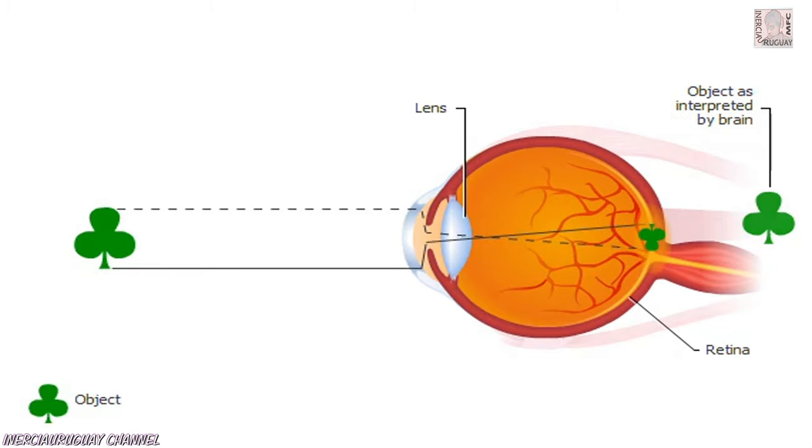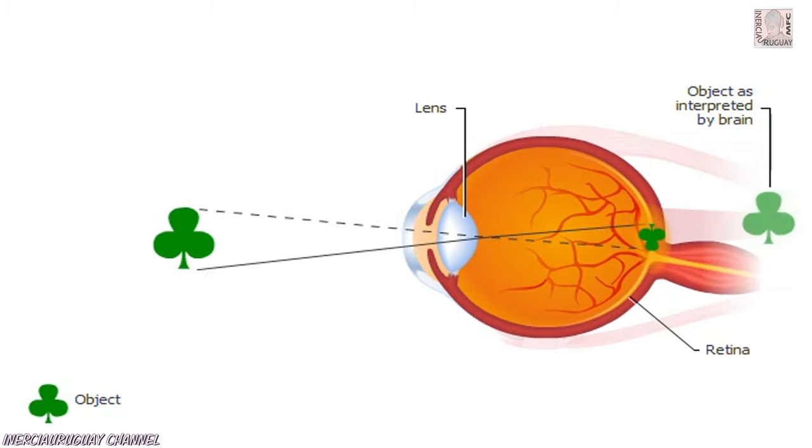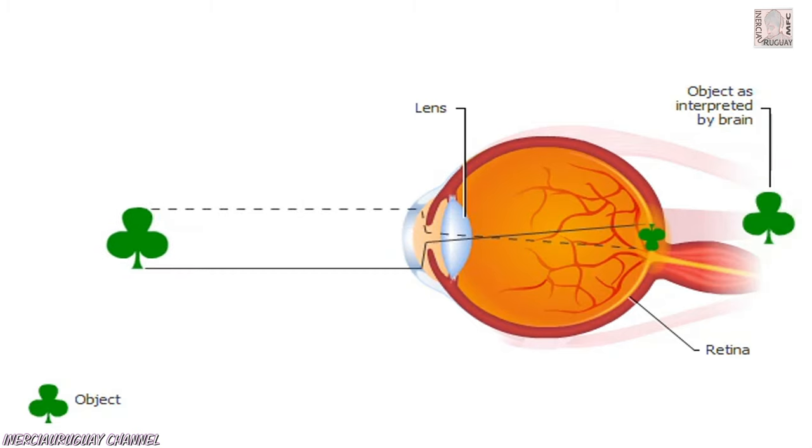To focus on nearby objects, the lens must change its shape. It thickens, causing light rays from the object to converge on the retina. To see objects far away, tiny muscles flatten the lens, thereby bringing the image into focus.